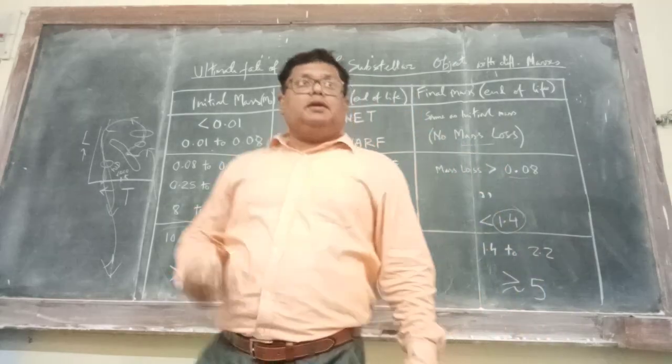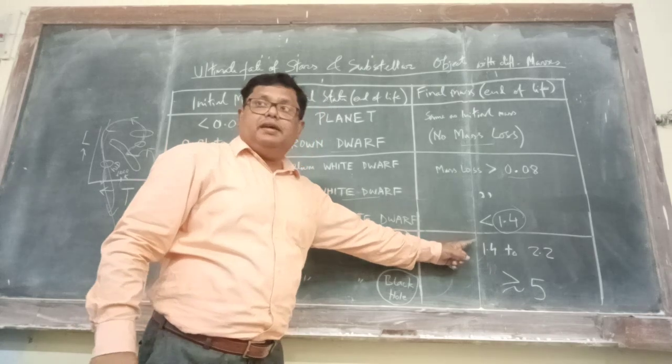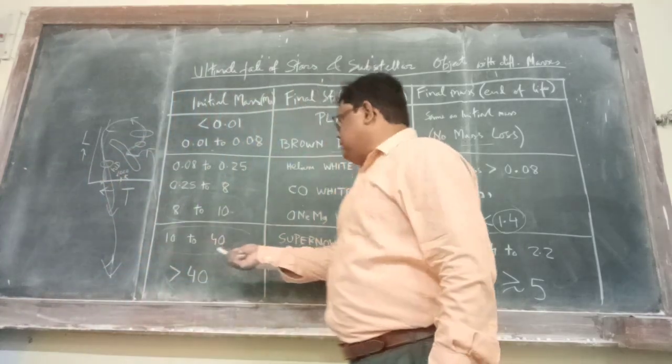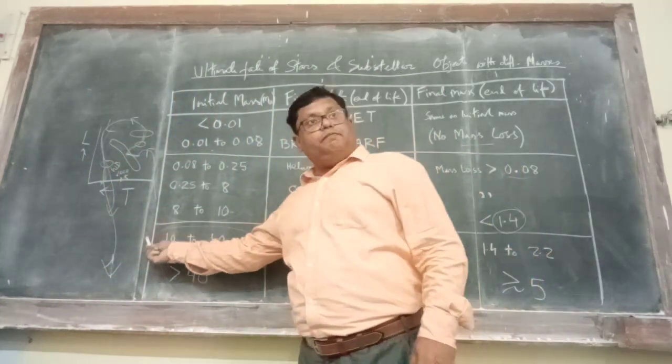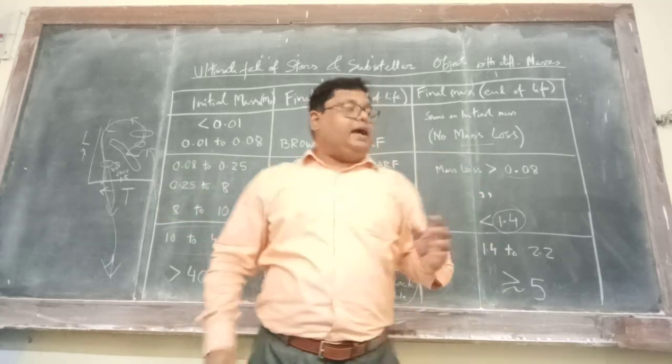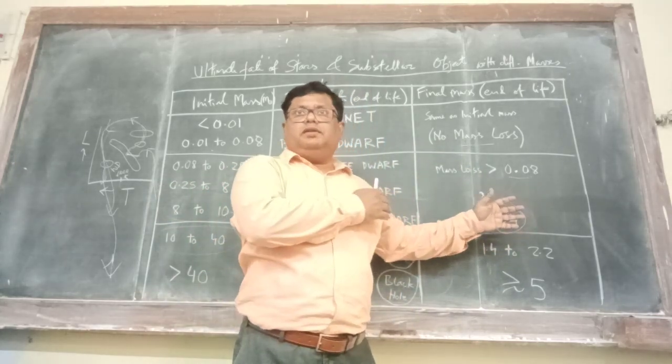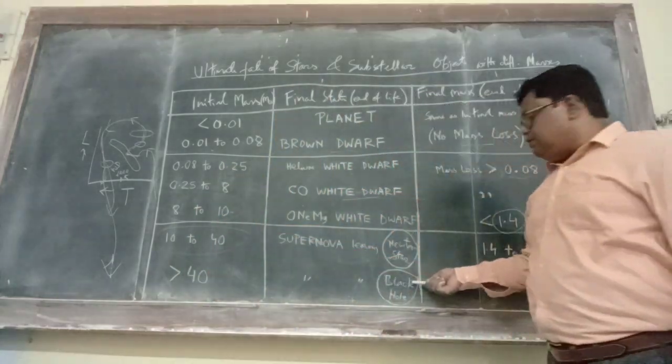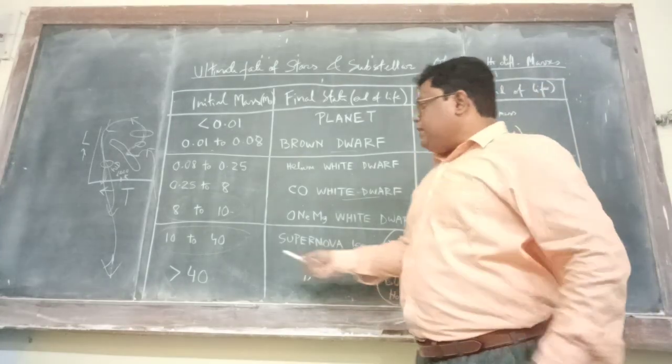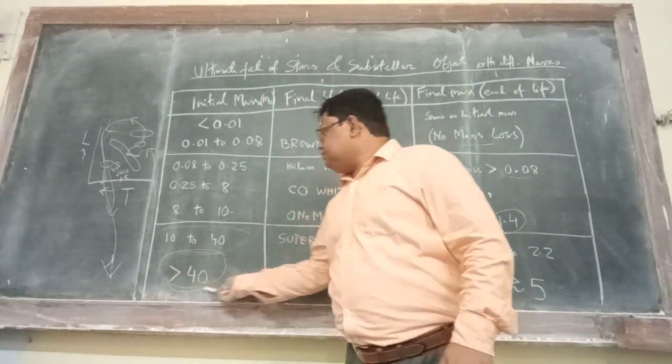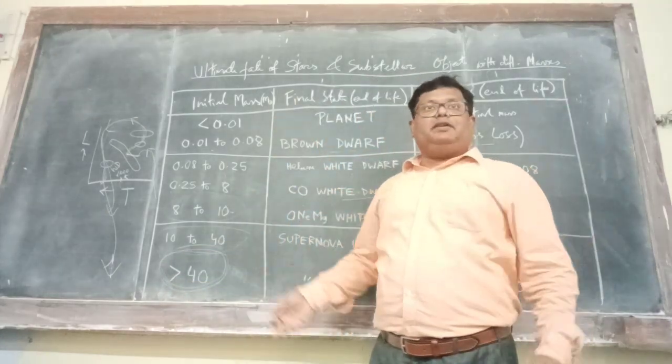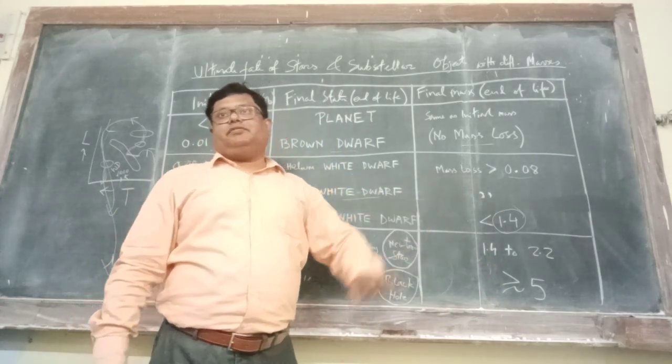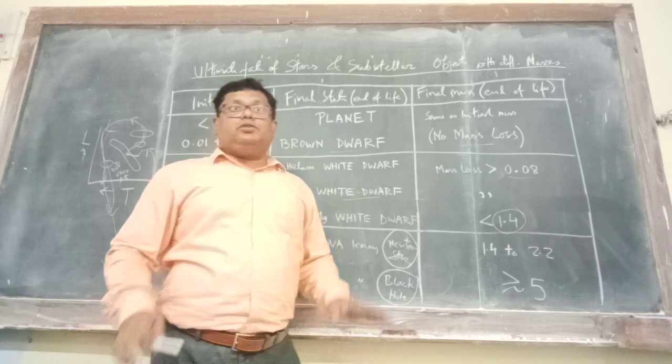And what is the mass loss? The mass loss is in the range 1.4 to 2.2. So remember this. For neutron star, the initial mass, this is very important, is in the range of 10 to 40. And the mass loss is between 1 to 2, roughly. And for the case of supernova which leaves a black hole, the initial mass is greater than 15. The more the better. And in this case again, the mass loss is greater than or equal to 5 solar masses.